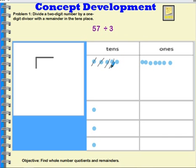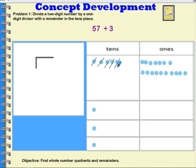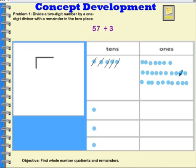I'm going to take this ten and change it for ten ones. I have another ten that I also have to decompose, or unbundle, or change in. So I'm going to trade in this ten and decompose this one ten into ten ones. Now, instead of having two tens over here, I have ten ones here which is equal to one ten, and ten ones here which is equal to one ten. I also have seven ones that I started with. So now I have 27 ones.